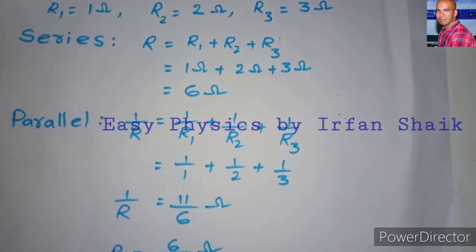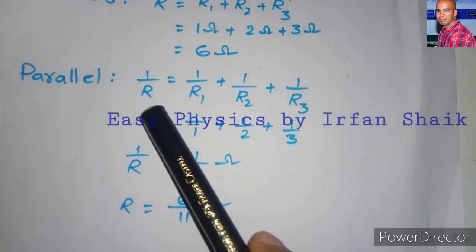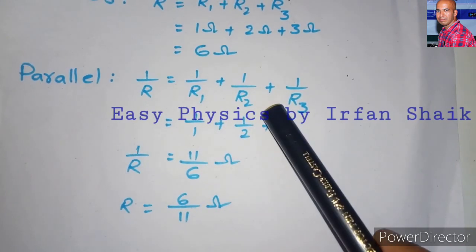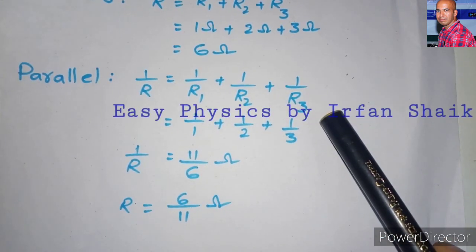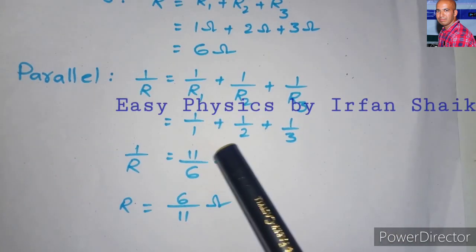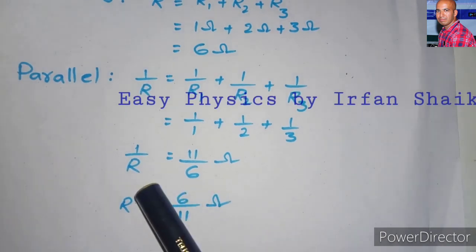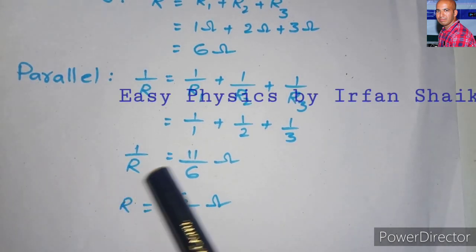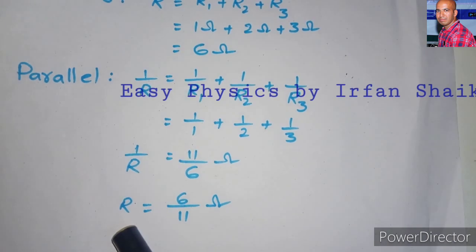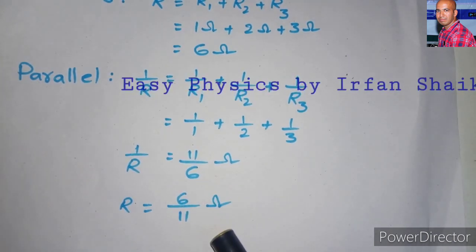When these three are connected in parallel, the formula is 1 by R equals 1 by R1 plus 1 by R2 plus 1 by R3. We know the values of R1, R2, and R3. By substituting these three values and simplifying, we get 1 by R equals 11 by 6 ohms. Then R equals the reciprocal of this, that is 6 by 11 ohms.